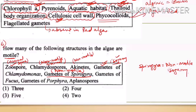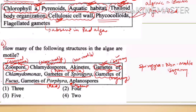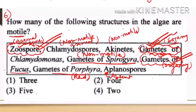Gametes of Fucus — a brown alga showing oogamy — have motile male gametes. Gametes of Porphyra are non-motile because Porphyra is a red alga, and in red algae all motile structures are absent (the prefix 'a-' means absent, 'plano' means motile). So the motile structures are: zoospores, gametes of Chlamydomonas, and gametes of Fucus — three structures in total. The answer is option one.